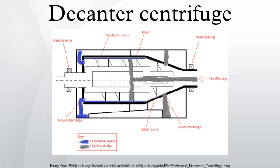In conveyor decanter centrifuges, the conveyor or scroll fits inside a rotating bowl and carries the solids settled against the wall, pushing them across a beach towards the underflow where the solids discharge. The conveyor allows for an increase in separation efficiency and feed capacity.